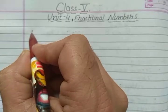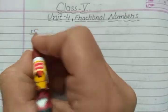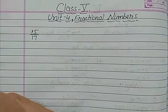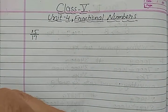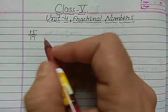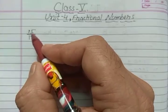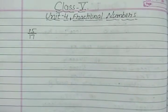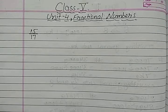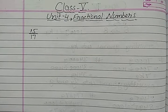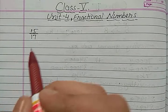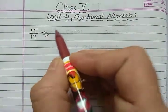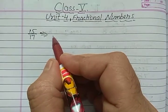Suppose we take 15 upon 17 and we want to write the reciprocal of this fraction. The numerator is 15 and the denominator is 17. To write the reciprocal, we will write the numerator as denominator and the denominator as numerator.